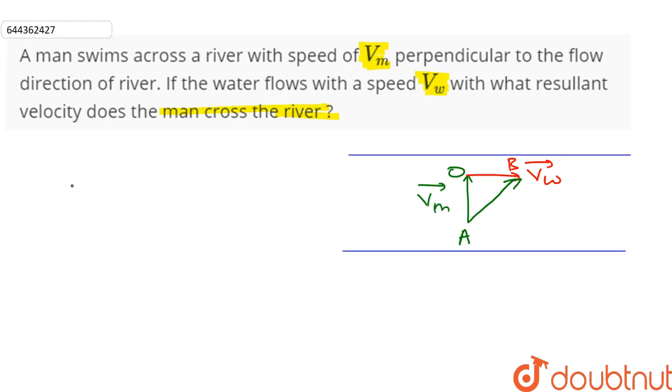So AB vector will be equal to AO vector plus OB vector.